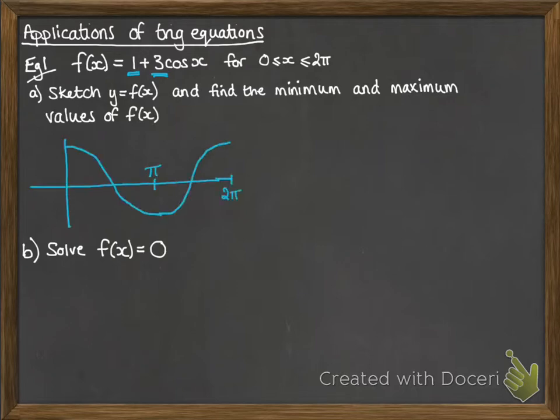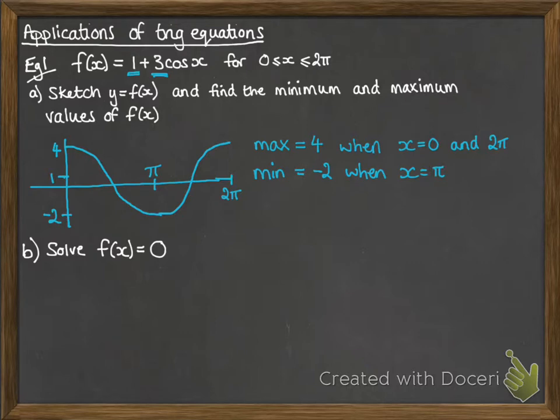So it's going to look like this, where it's going between 4 and minus 2, and the middle of it will be at 1, so it's been shifted up by 1 and stretched vertically by 3. It's still going to have those maximum and minimum points at pi, 0, and 2 pi. So the maximum is 4 when x equals 0 and 2 pi, and the minimum is minus 2 when x equals pi.